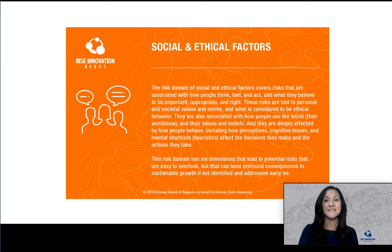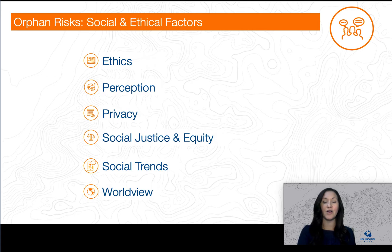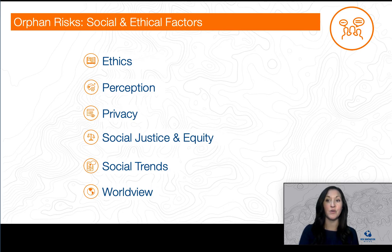The six dimensions of risk in this domain are ethics, perception, privacy, social justice and equity, social trends, and worldview. So how do you know which of these risks may threaten your organization?